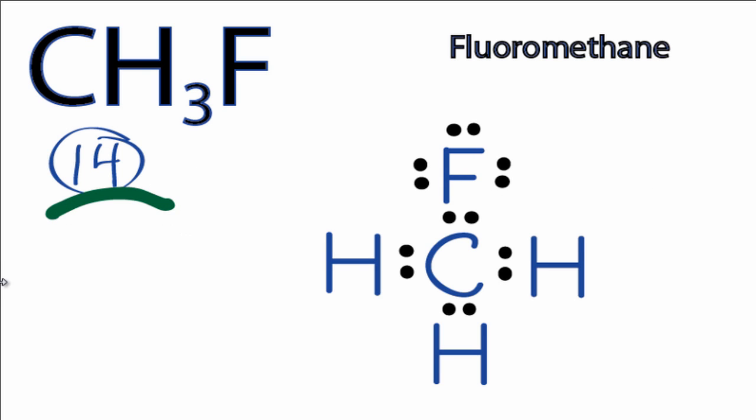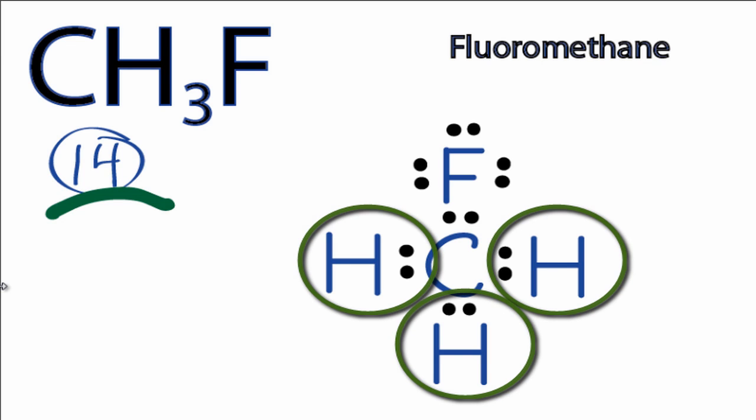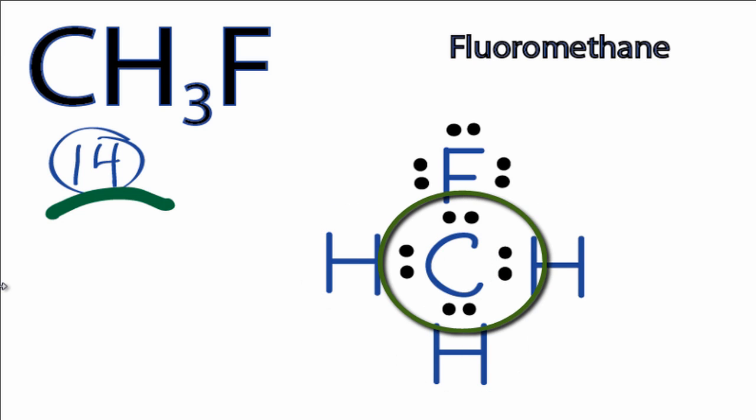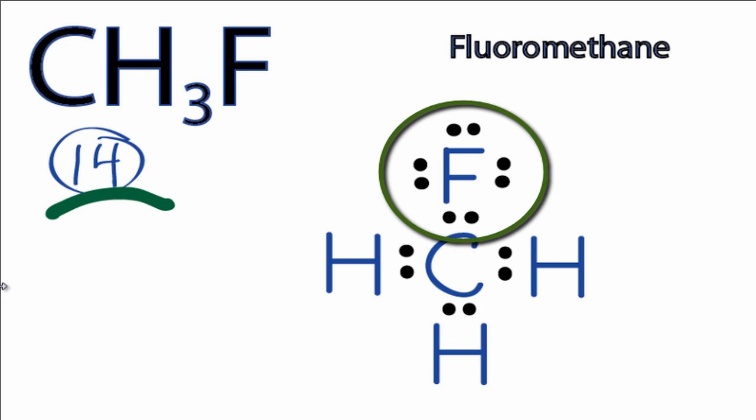So at this point, we've used all 14 valence electrons. The hydrogens, they each have 2 valence electrons. Their outer shells are full. The carbon, it has 8, and its octet is full, as well as fluorine, which also has an octet.